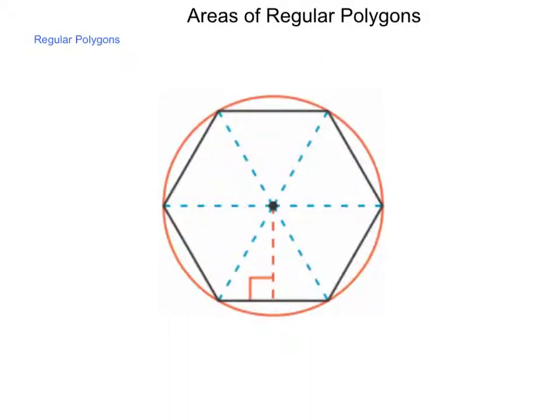As we work through our study of area, we're going to look at the areas of regular polygons. Since regular polygons do have special characteristics that set them apart, they also have special ways of calculating area that don't affect the others. First, we need to look at the parts of a regular polygon.